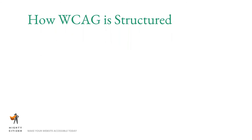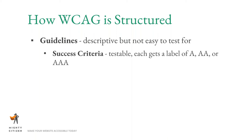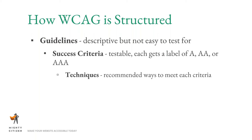Those are the overall principles for WCAG, but they don't provide a lot of information about what you should actually do. Under each principle, there are guidelines and criteria and techniques to help guide you. The guidelines are descriptive high-level goals — not really easy to test for. Under the guidelines are success criteria, which are more testable and carry labels of A, AA, or AAA. Under those are techniques — sufficient and advisory — that provide recommended ways to meet each criterion.